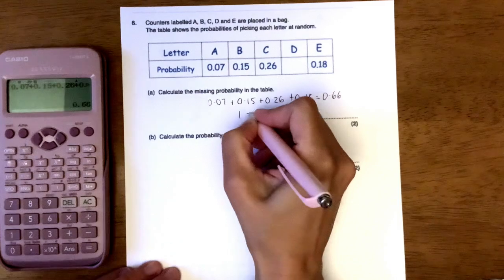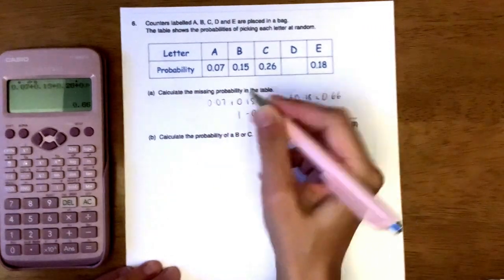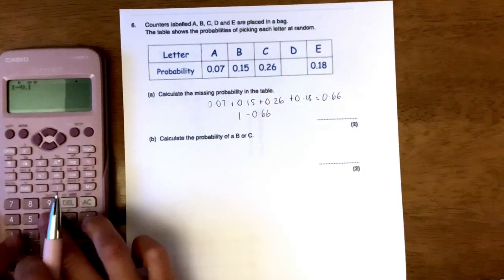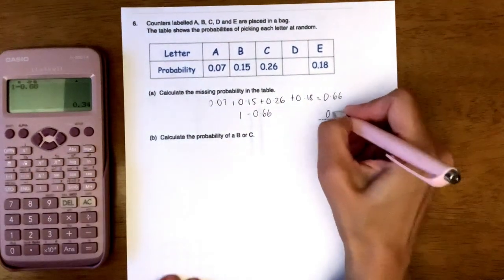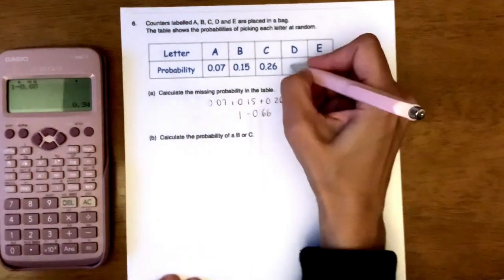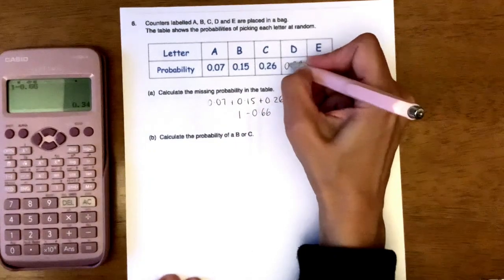And because we know that the probabilities are going to add up to 1, we just take that number away from 1. So 1 take away 0.66 leaves us with 0.34 as the missing probability.